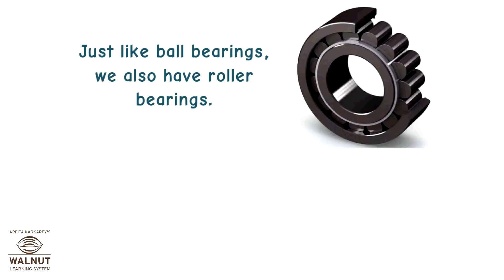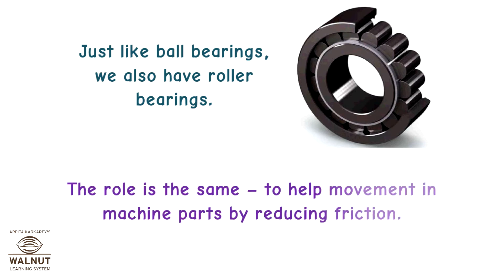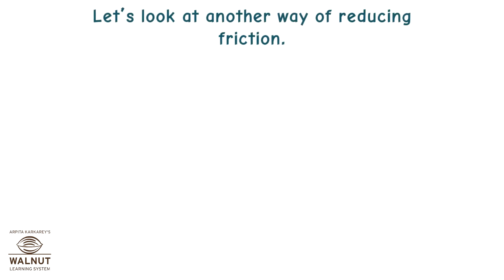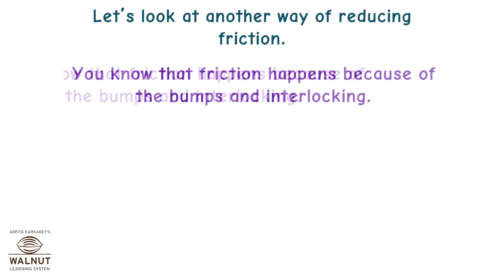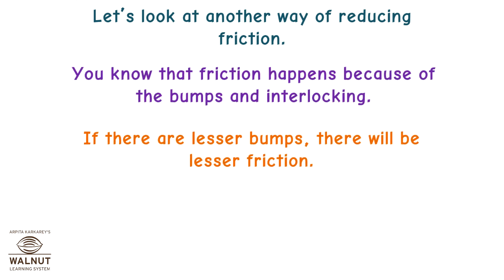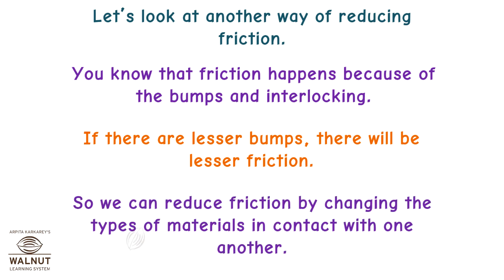Just like ball bearings, we also have roller bearings. The role is the same — to help movement in machine parts by reducing friction. Let's look at another way of reducing friction. You know that friction happens because of the bumps and interlocking. If there are lesser bumps, there will be lesser friction. So we can reduce friction by changing the types of materials in contact with one another.